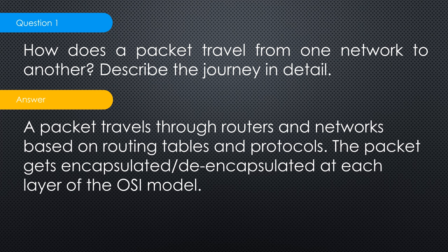I touched on this in the last video. A packet travels through routers and networks based on routing tables and protocols. The packet gets encapsulated and de-encapsulated at each layer of the OSI model. So here you touch on the OSI model, Ethernet, MAC addresses, and routers. Your application sends data down to the presentation layer, which does ASCII encoding, then down to TCP or UDP — deciding if it requires a handshake or is a stream.